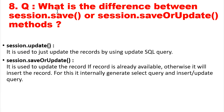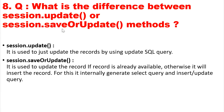The next question is: what is the difference between session.update() and session.saveOrUpdate()? session.update() is used to update a record using an UPDATE SQL query — it will not save, it will just perform the update operation if the record is found. session.saveOrUpdate() will update the record if it is already available, otherwise it will insert the record. Internally it generates a SELECT query and also an INSERT or UPDATE SQL query.